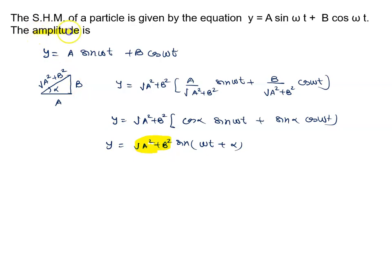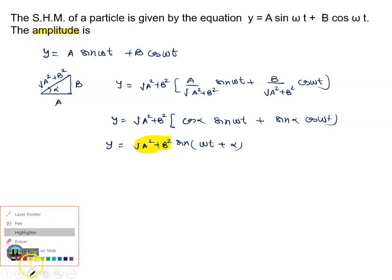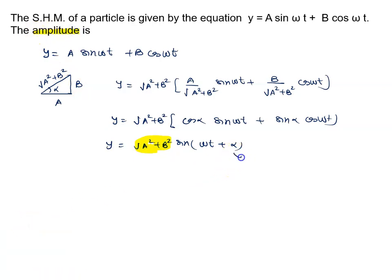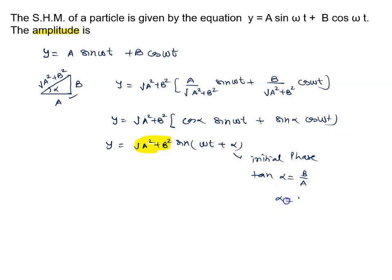The function √(a² + b²) is the amplitude. The angle α is known as the initial phase. From the right-angle triangle, we can say tan(α) = b/a, or α = tan⁻¹(b/a).